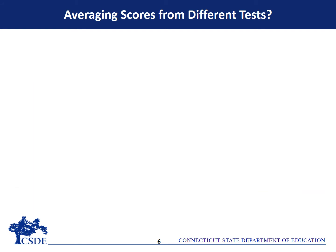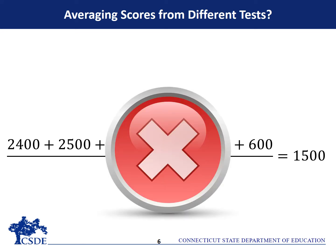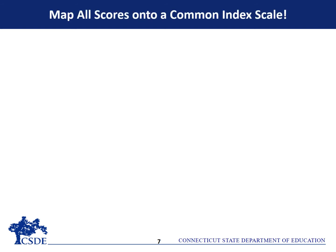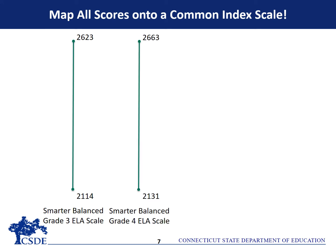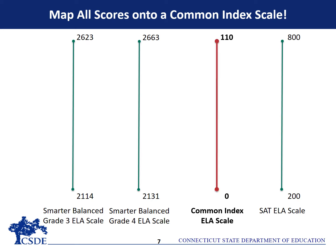You can't simply average these different scores to get a DPI. In order to average scores across these different tests, we first need to map all scores onto a common scale. This is done by converting each student's score from a test — whether it's Smarter Balanced Grade 3, Grade 4, or the SAT — onto a common scale that ranges from 0 to 110. The higher the student's score on the test, the closer their index point value will be to 110.